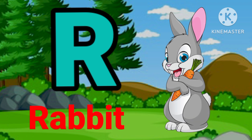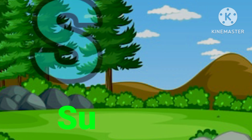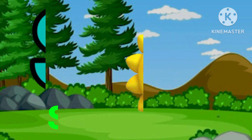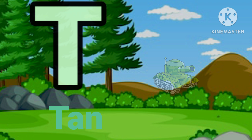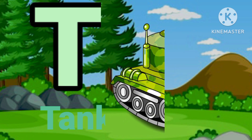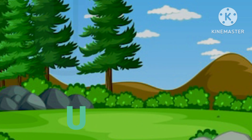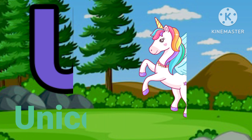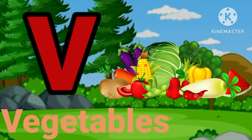A for rabbit, S for sun, T for dam, U for unicorn, V for vestibule.